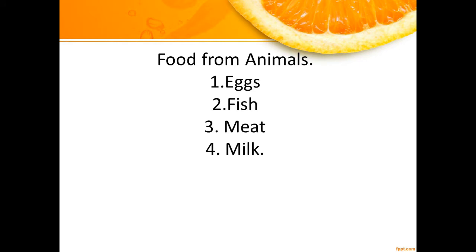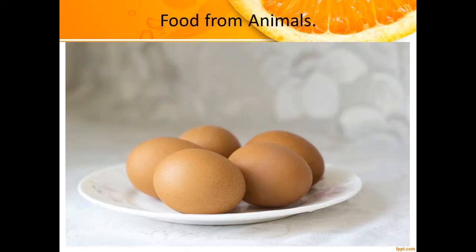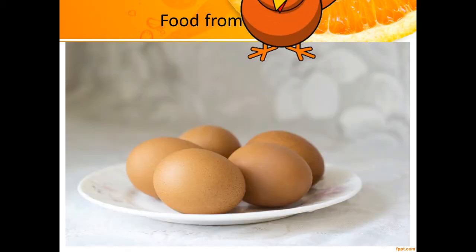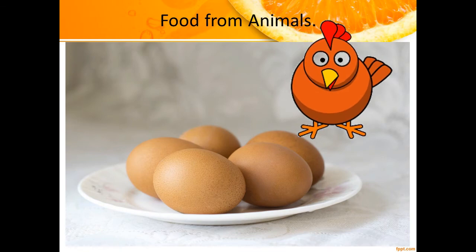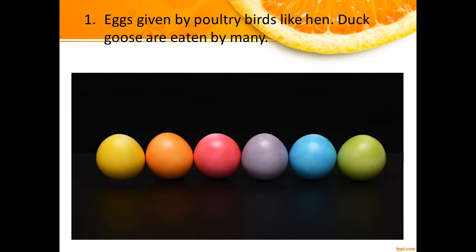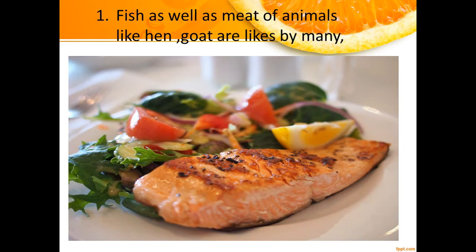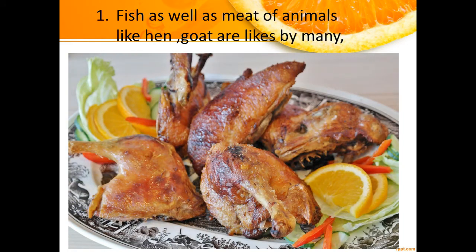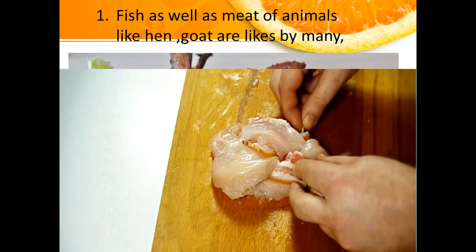Now let's know about the food we get from animal sources, like eggs, fish, meat, and milk. Eggs are a great source of protein for us. We get eggs from poultry birds like hen, duck, and goose. Fish as well as meat of animals like ham and goat are liked by many of us.